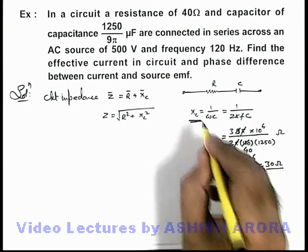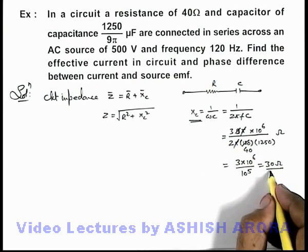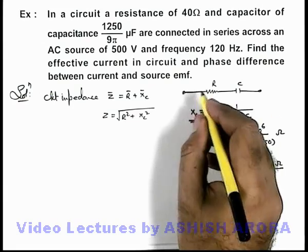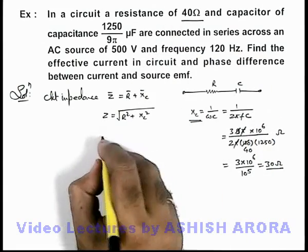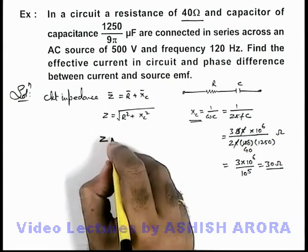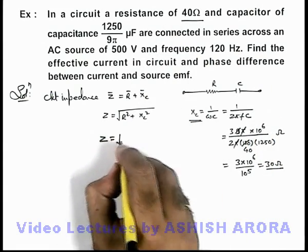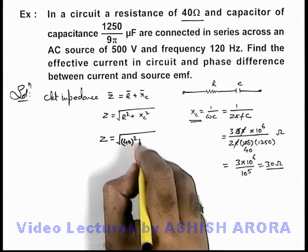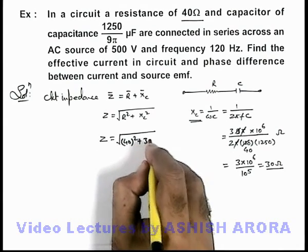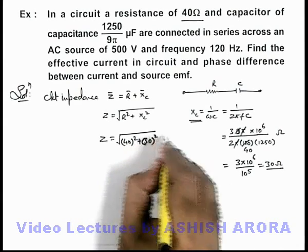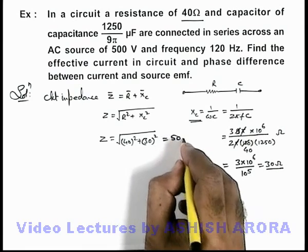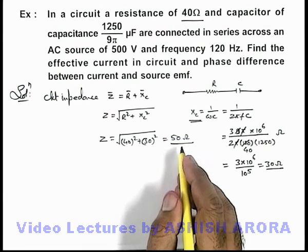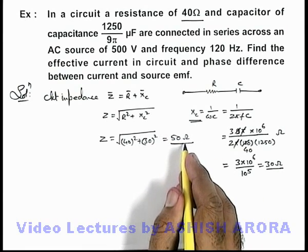The capacitive reactance is 30 ohms due to the capacitance, and the resistance is already given as 40 ohms. Therefore, the circuit impedance Z = √(40² + 30²), which equals 50 ohms — that is the total impedance of the circuit.